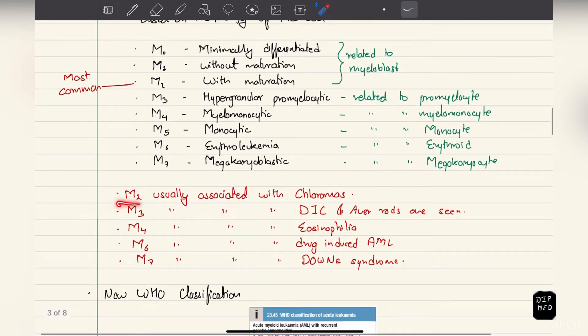M2 is usually associated with chloromas, which is a solid tumor formed due to accumulation of these cancerous cells. M3 is usually associated with disseminated intravascular coagulation, and Auer rods are mainly seen in this type of process. M4 is usually associated with eosinophilia, M6 drug-induced AML, and M7 Down syndrome.